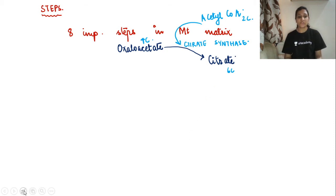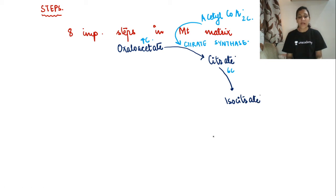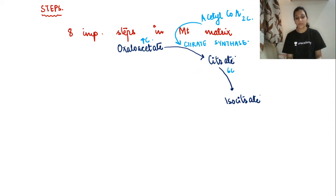After formation of citrate, isocitrate is formed. The names are similar because they differ only in their isomeric form — it is an isomerization type of reaction. The enzyme responsible for this conversion is aconitase. Isocitrate is also a 6-carbon compound.